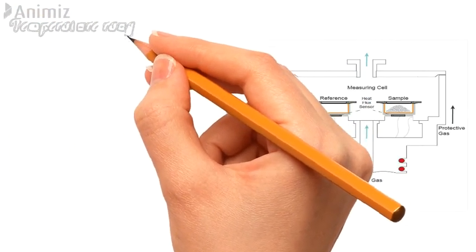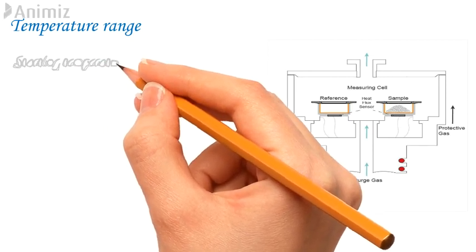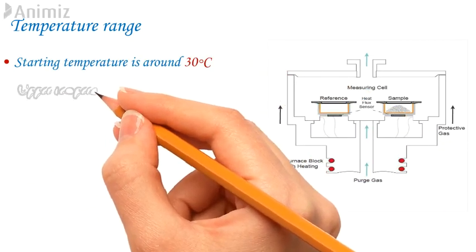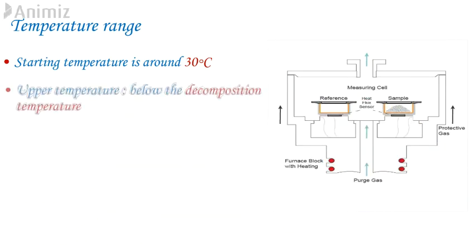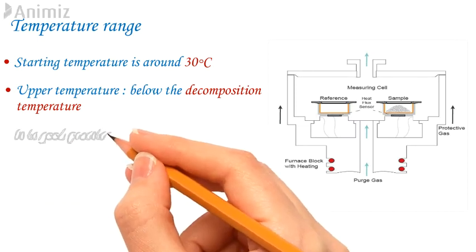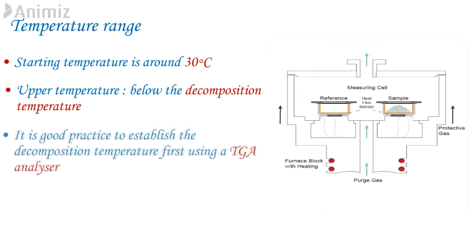10. Temperature Range. The starting temperature should be well below the beginning of first transition that you want to measure in order to see it clearly following a period of flat baseline. This should take into account the period of initial transition where the scan rate is not yet fully controlled and baseline is not stable. With ambient DSC systems the starting temperature is often around 30 degrees Celsius. The upper temperature should be below the decomposition temperature of the sample. Decomposing a material in DSC normally gives rise to very noisy drifting response and evolved volatiles will contaminate the system. It is best practice to establish decomposition temperature first before using DSC analyzer.